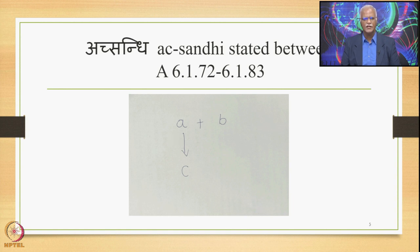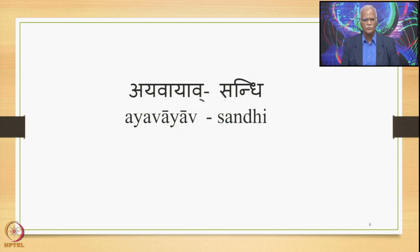This Ekasthanika Ekadesha is stated in the Ashtadhyayi in sections 6.1.72 onwards up to 6.1.83. We have studied in detail the first instance, namely Yen Sandhi stated by the Sutra Iko Yanachi. Now we plan to study the second instance, namely the A-Yavayava Sandhi.